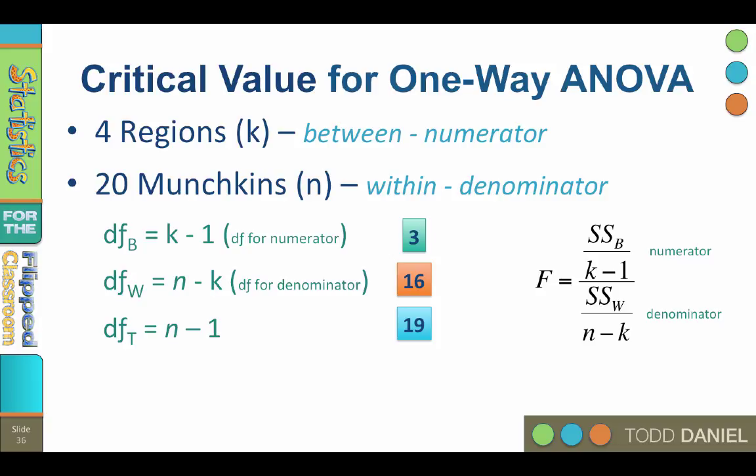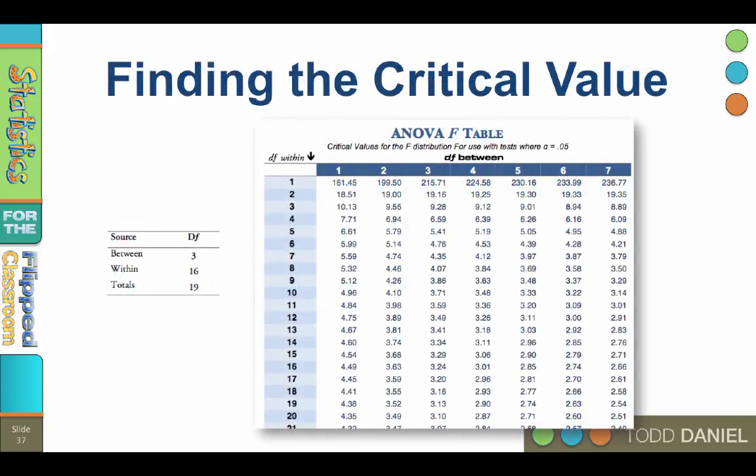Now finding the critical value, once we know these degrees of freedom, requires turning to the ANOVA f table. The degrees of freedom between are contained in the columns at the top of the table. The degrees of freedom within are in the rows. The intersection of the column and the row is the critical value. So for 3 degrees of freedom between and 16 degrees of freedom within, the critical value is 3.24.